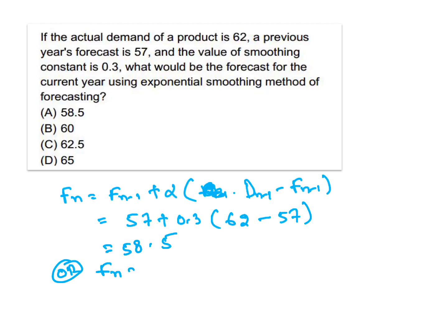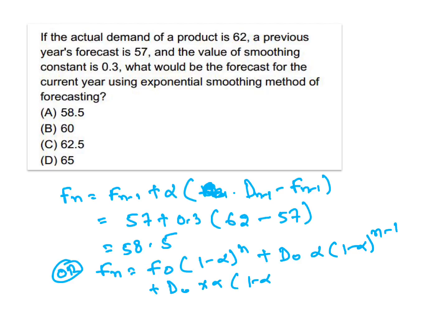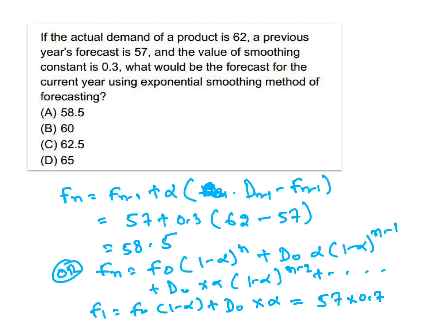You can also use the alternative formula: F_n = F_0 × (1 − α)^n + D_0 × α × (1 − α)^(n-1) + ... For F_1: F_1 = F_0 × (1 − α) + D_0 × α = 57 × 0.7 + 62 × 0.3. Calculating gives 58.5, so the answer is 58.5.